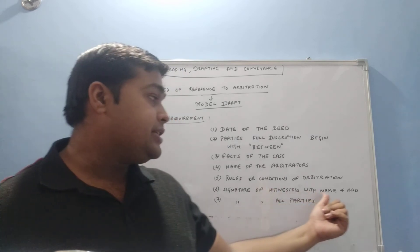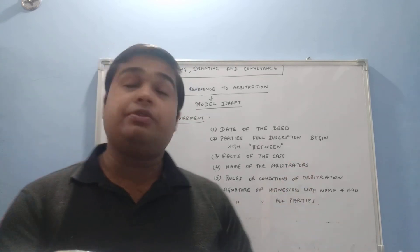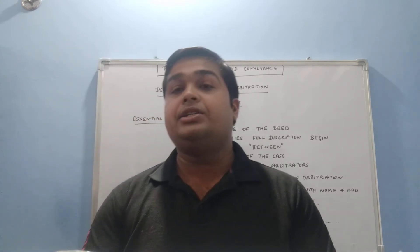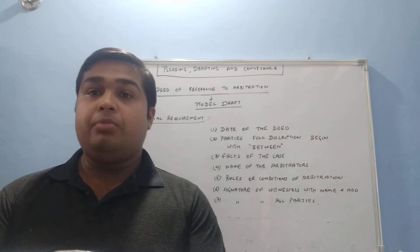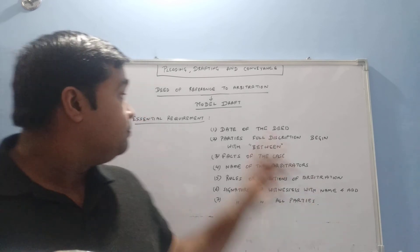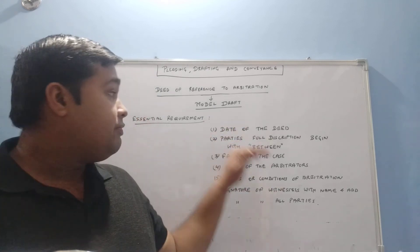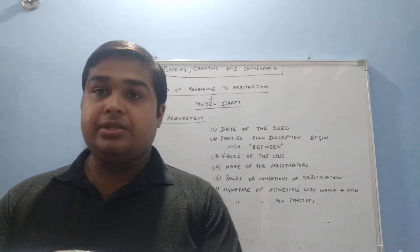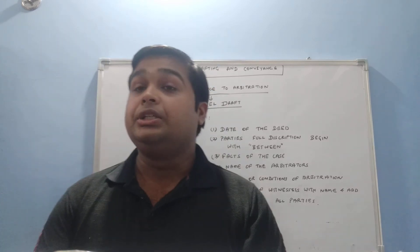On the left side, the signatures of the witnesses with their names and addresses must be mentioned — two witnesses are required. On the right side, signatures of all the parties must be present. These are the essential requirements of the deed. The main model draft with its page number is mentioned in the description of this video, so you can refer to it.